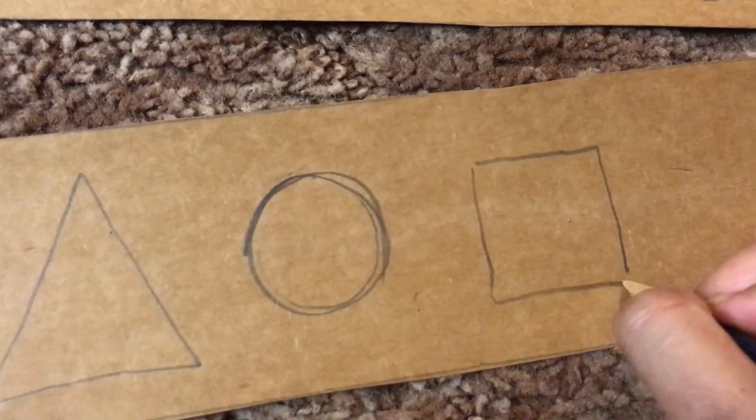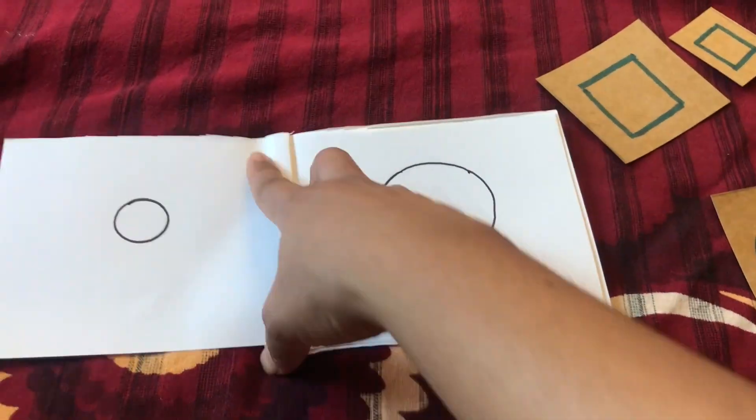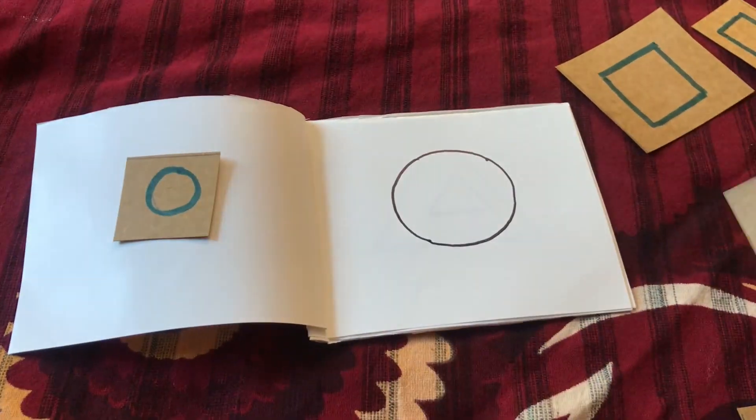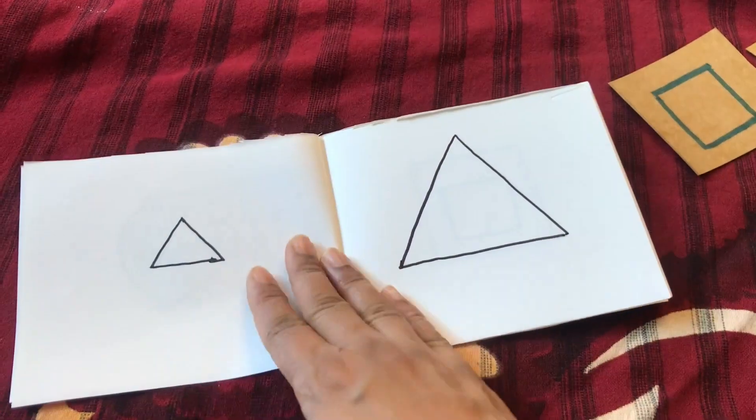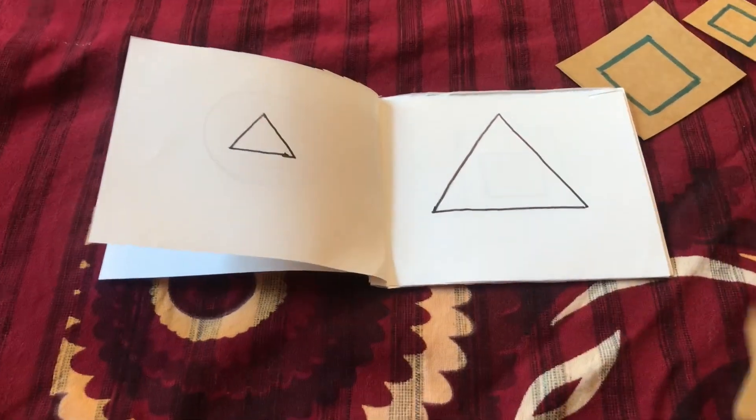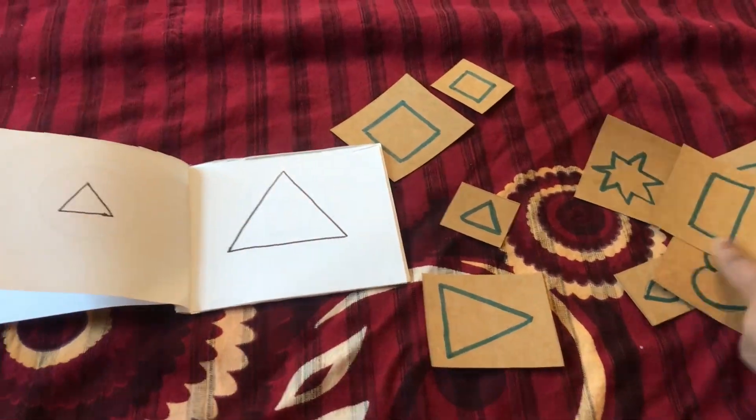Then simply cut out the cards. You can easily turn this book into an interactive book by asking learners to match smaller circles with the smaller circles and bigger circles with the bigger circles, and continuously do this with the other shapes also.